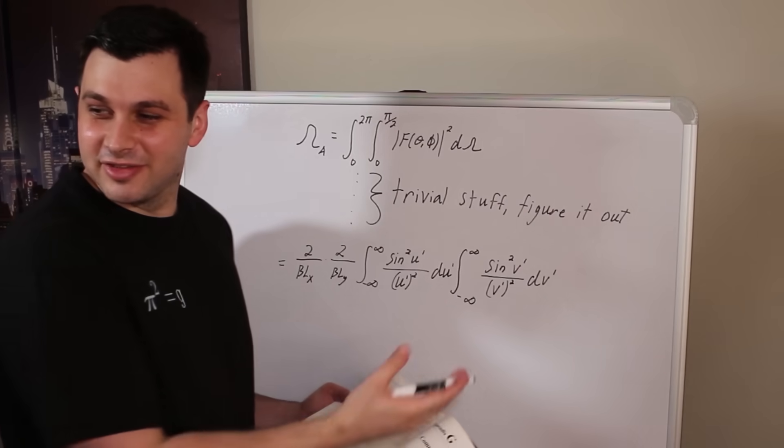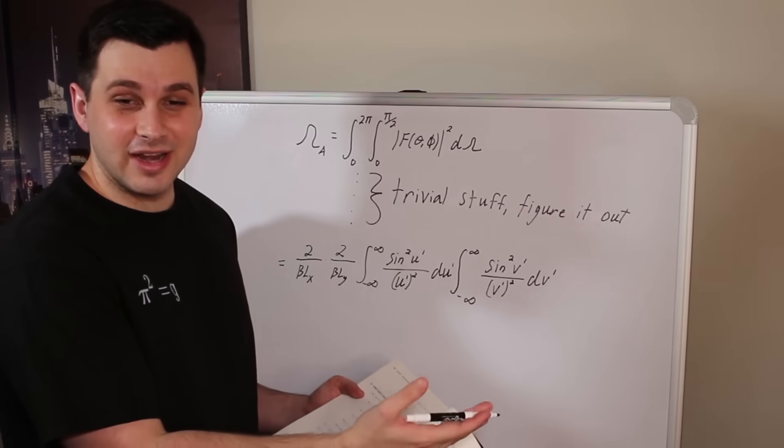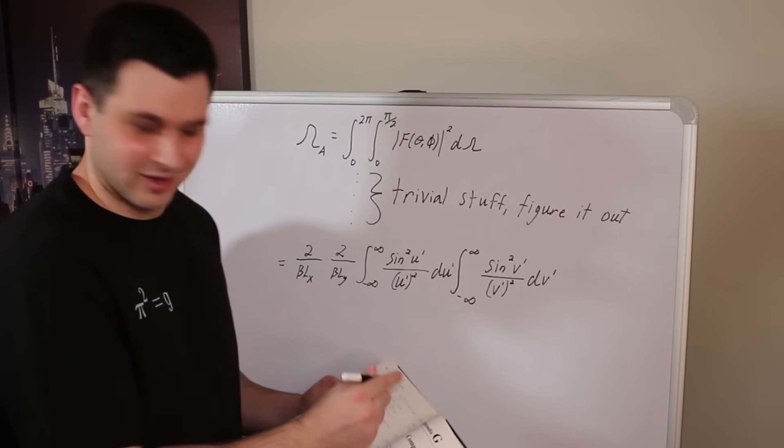How about we use actual integration and residues for once instead of a lookup table? We found the version already. That was pretty quick.